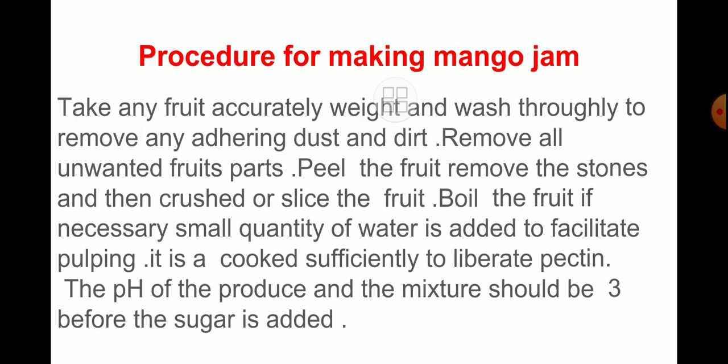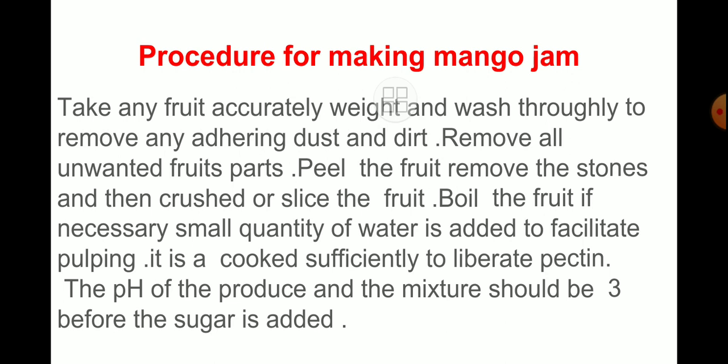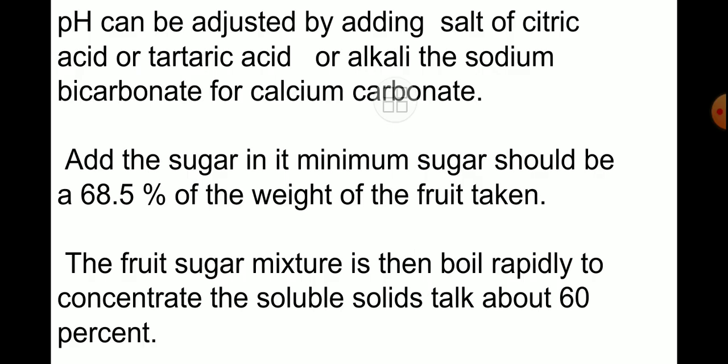Peel the fruit, remove the stones, then crush or slice the fruit. Boil the fruit — if necessary, a small quantity of water is added at the time of boiling, because if sufficient moisture is not present in the pulp, it may burn. To avoid that, if required, a small amount of water is added to facilitate the pulping. Cook it sufficiently to liberate the pectin. Then check the pH of the boiled pulp — if the pH is three, only then add the sugar. Use proper scientific methodology at the time of preparation.